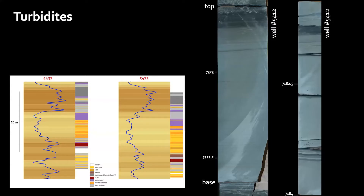Let's start with turbidites, shown here on the left in bright yellow. Turbidites make up most of the low gamma-ray facies in well 5412, and they seem to correlate to a section with a lot of laminated facies — the orange colors in well 4431. The expression of turbidites in the core is the usual: sharp bases, more lamination towards the top, and a well-defined, although not necessarily very thick, mud cap, as you can see here.